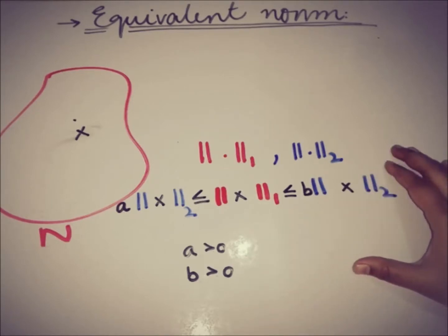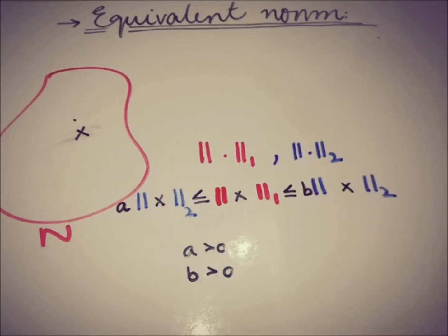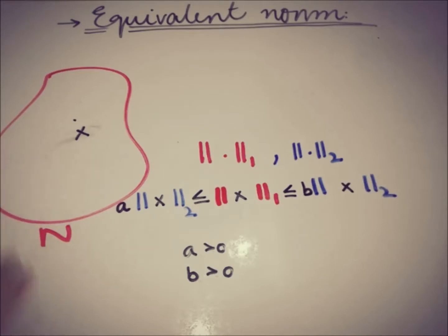If this inequality holds true, then we can say that norm 1 is equivalent to norm 2, for all elements of N.